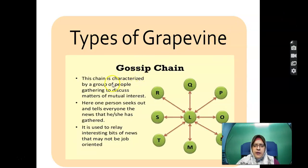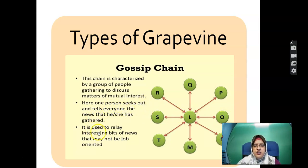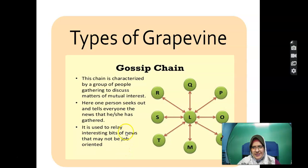The gossip chain is characterised by a group of people gathering to discuss matters of mutual interest — there is a reason they meet. One person seeks out and tells everyone the news gathered; it is used to relay interesting bits of news that may not be job-oriented. All feedback also comes back to the original person who started the story.